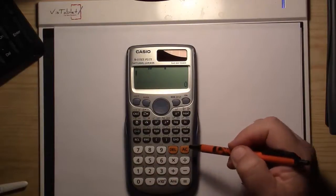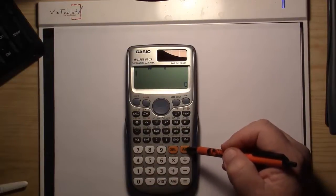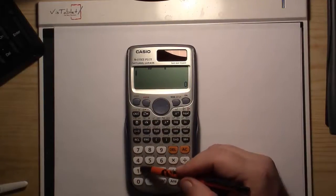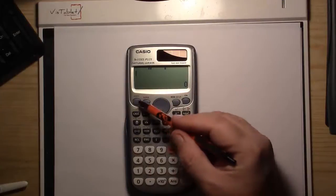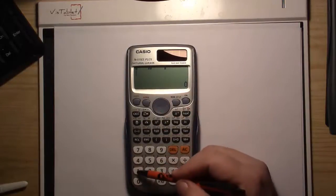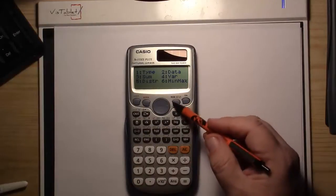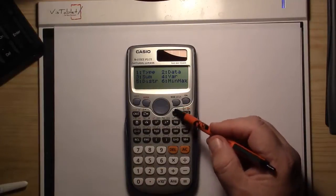press the AC button to get out. Above the 1, you'll see it says stat/dist. Press the shift button, then number 1. This only works if you did your mode setup first and put it into statistics mode.